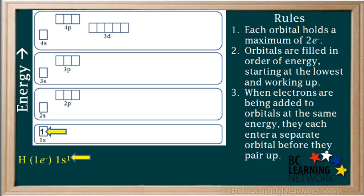Just a little point here. The electron configurations we're doing here always assume that electrons occupy the lowest energy orbitals first. These configurations are called ground state configurations. So the ground state electron configuration of hydrogen is 1s¹, as shown here.